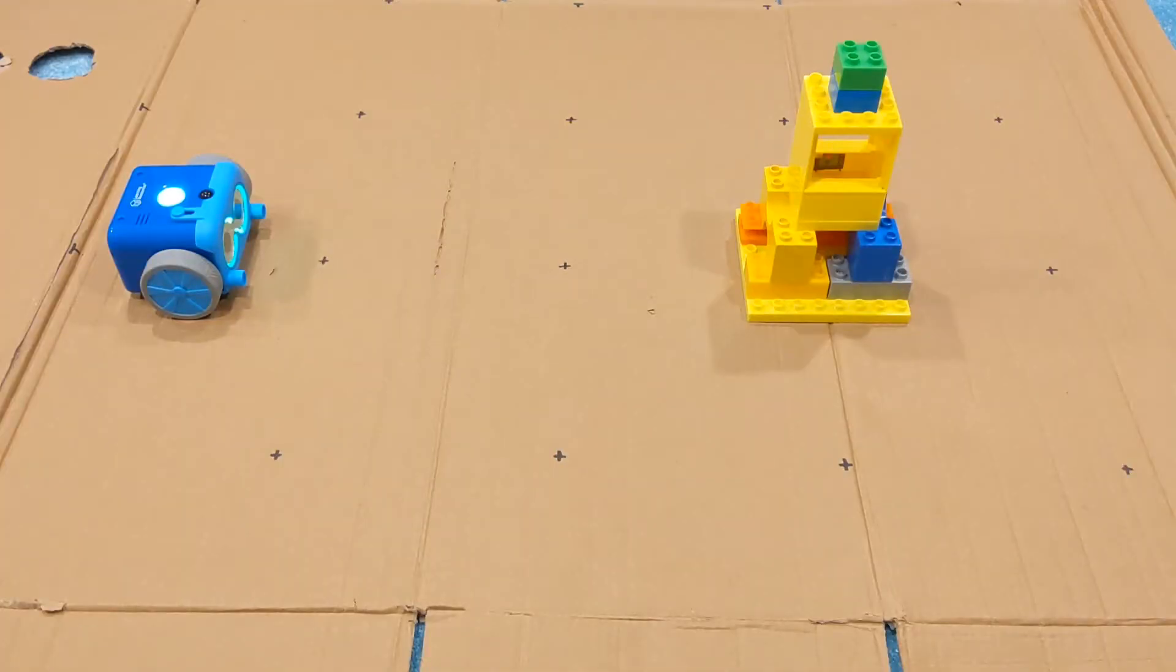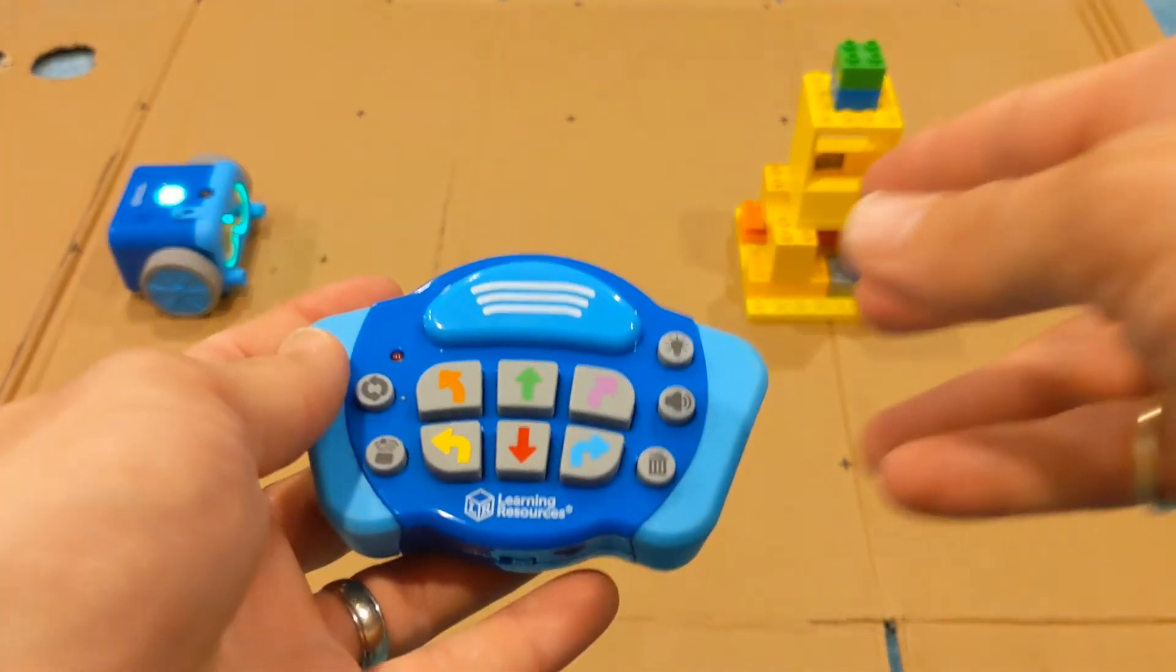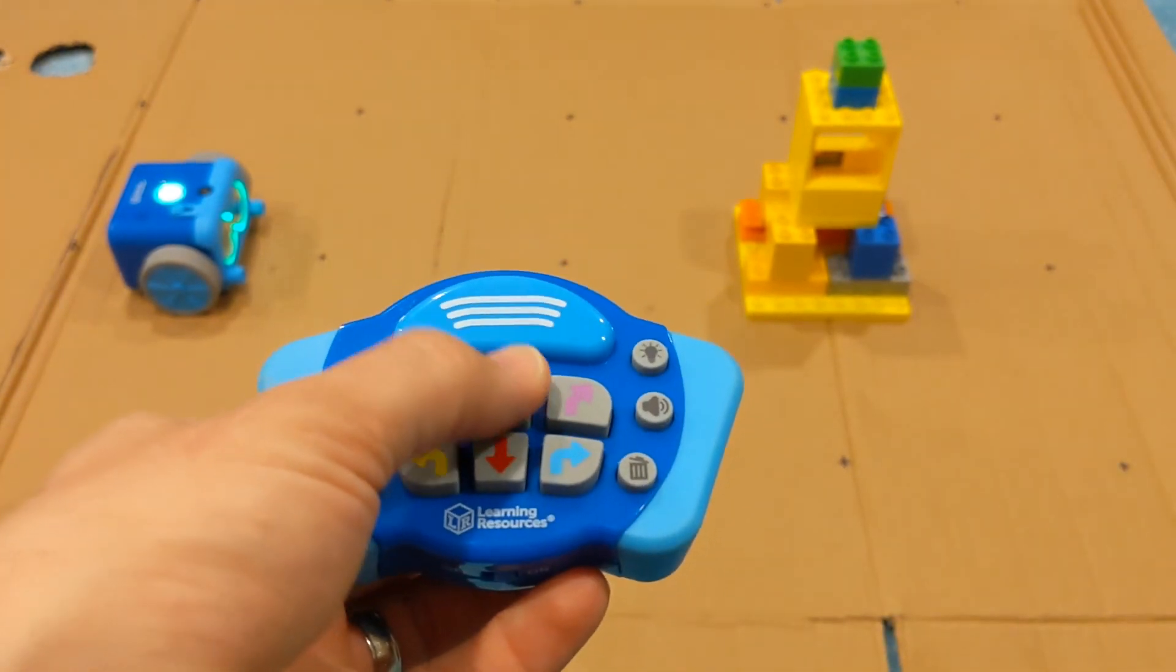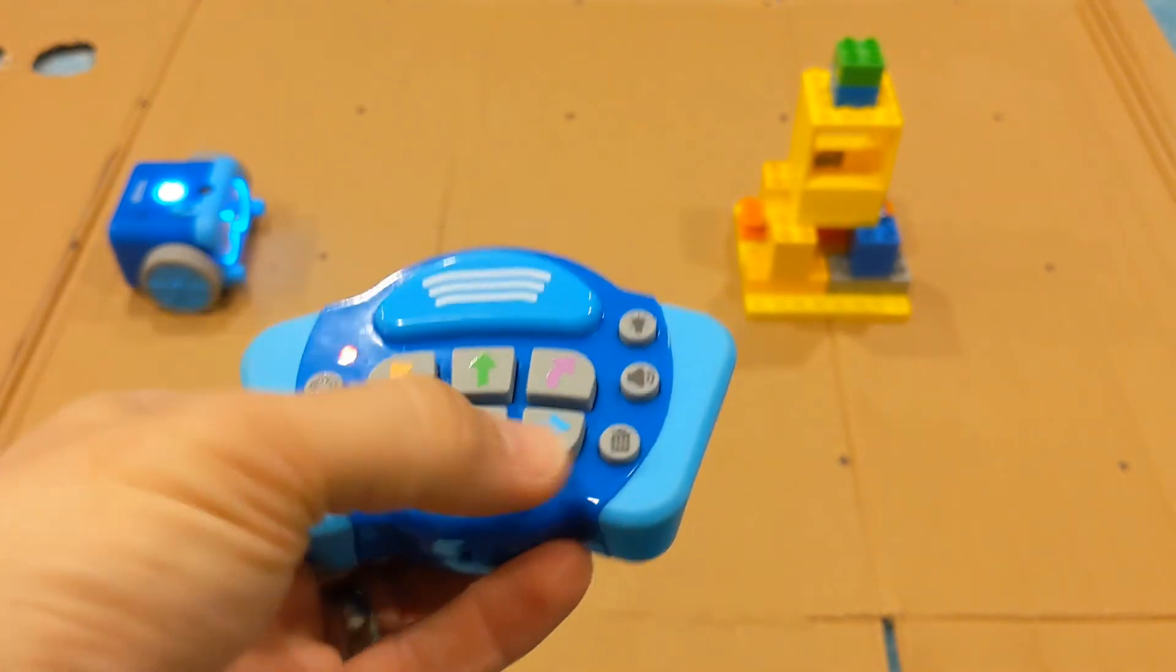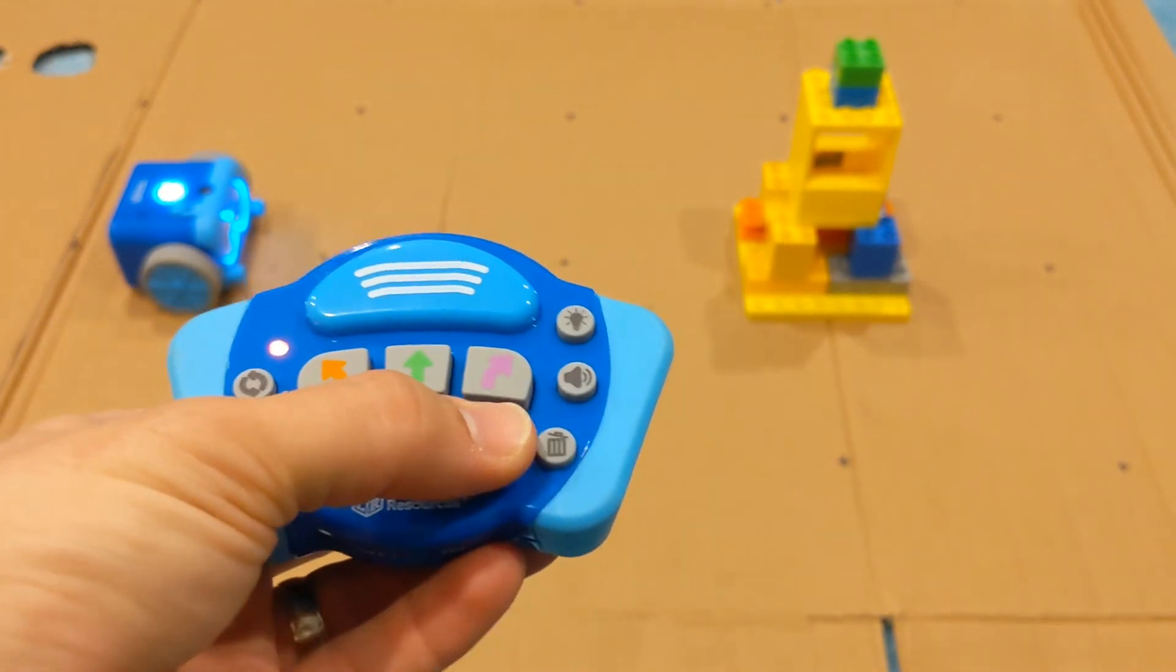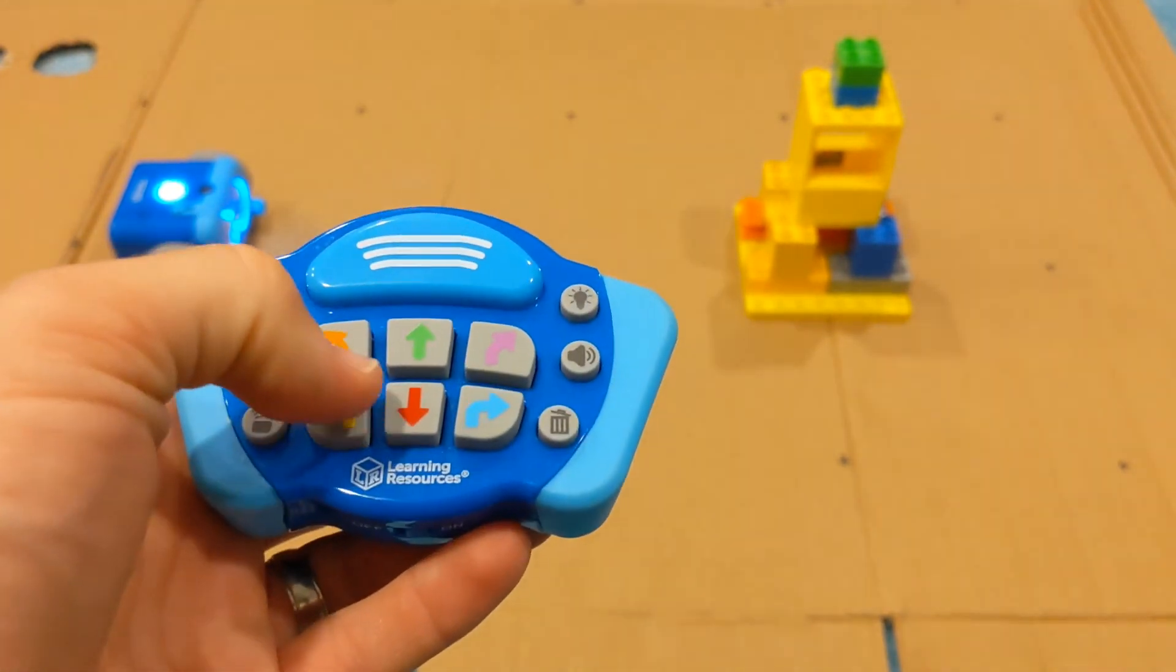When it comes to avoiding objects, you start off by programming Botley with the program you want to follow. By pressing the object detection button on the bottom left-hand corner of the controller, you can give it a series of instructions to follow if it gets within 10 inches or about 30 centimeters of it.